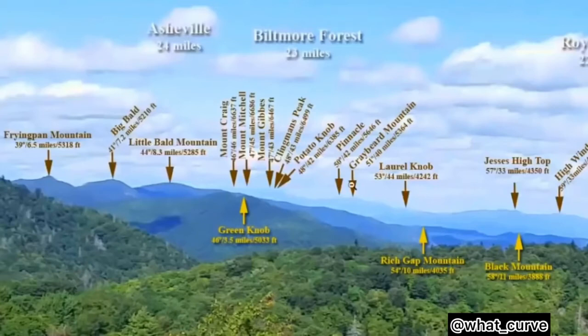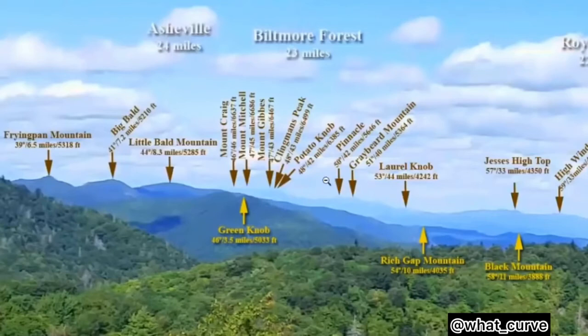Those prominent peaks include Greybeard, Pinnacle, Potato Knob, Clingmans Peak, Mount Gibbs, Mount Mitchell — which is a great place to hike — Mount Craig — also a great place to hike — and others. These are the most prominent peaks of the Black Mountain Range, which rises up out of Black Mountain, North Carolina.